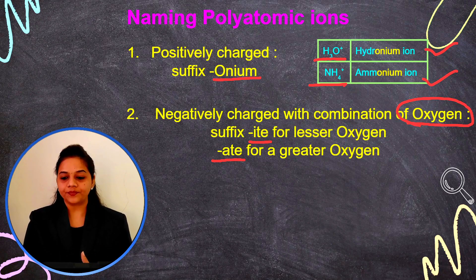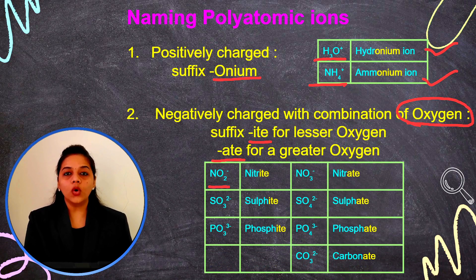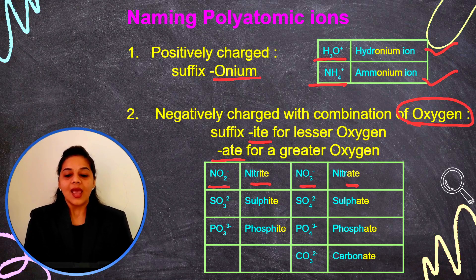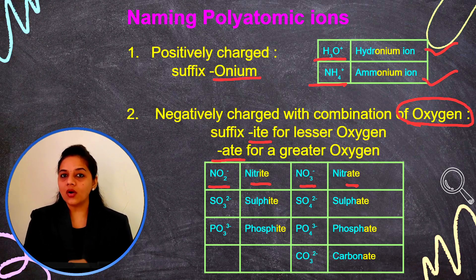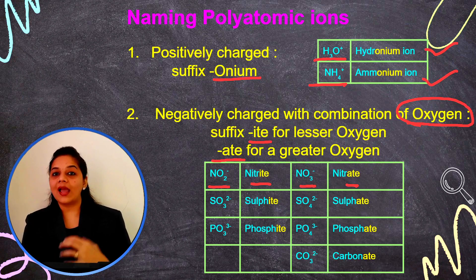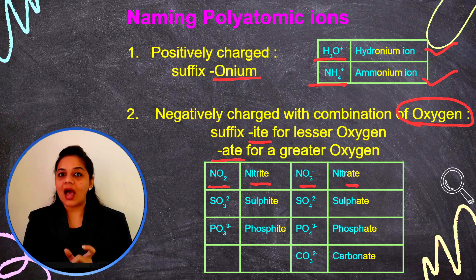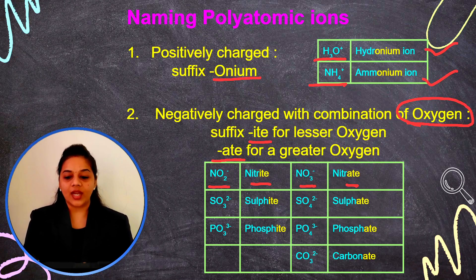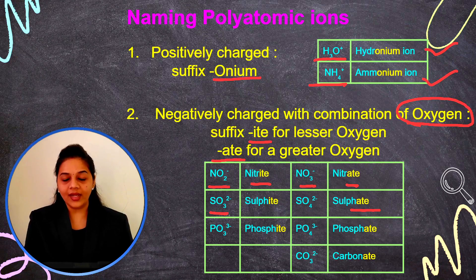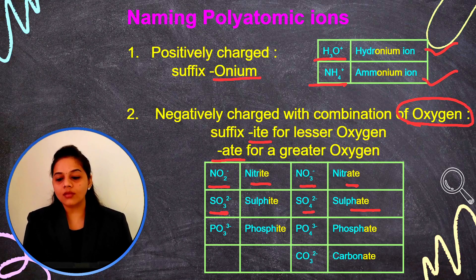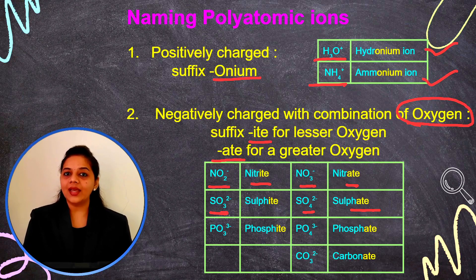Let's take examples. NO2 minus is nitrite and NO3 minus is nitrate. In nitrite, two oxygens are present, and in nitrate, three oxygens are present — so lower oxygen number gets '-ite' and higher oxygen number gets '-ate'. Similarly, SO3 2-minus is sulfite and SO4 2-minus is sulfate — three oxygens in sulfite and four oxygens in sulfate.